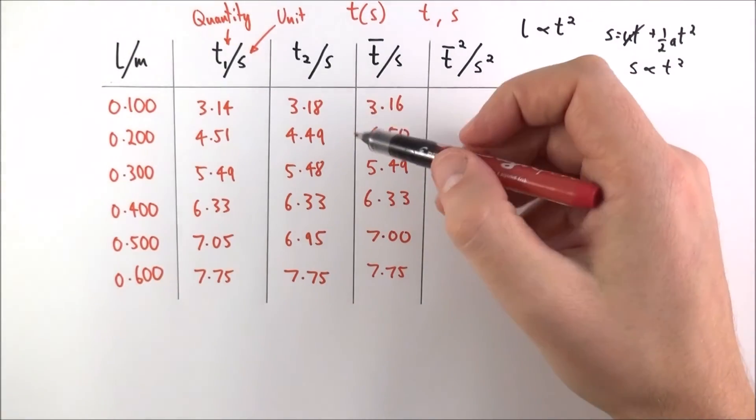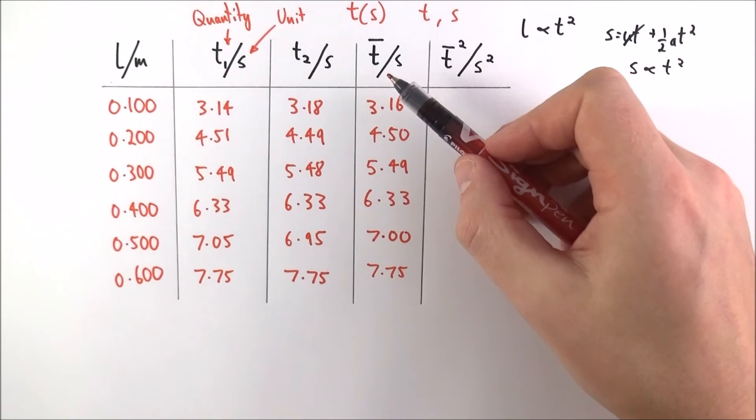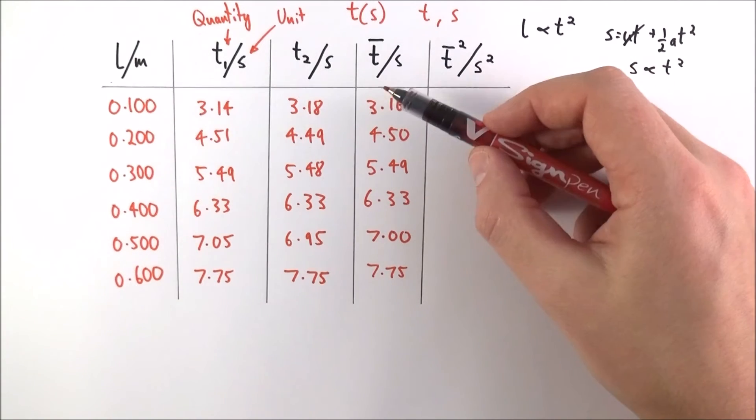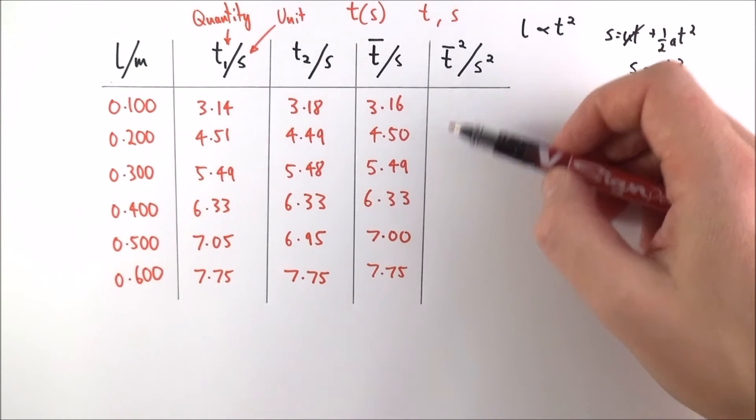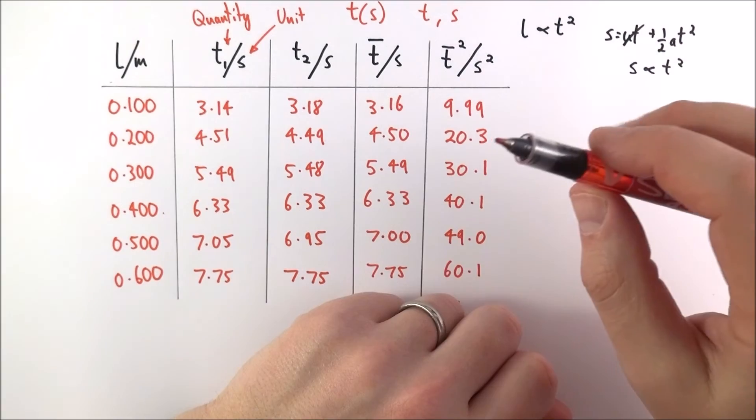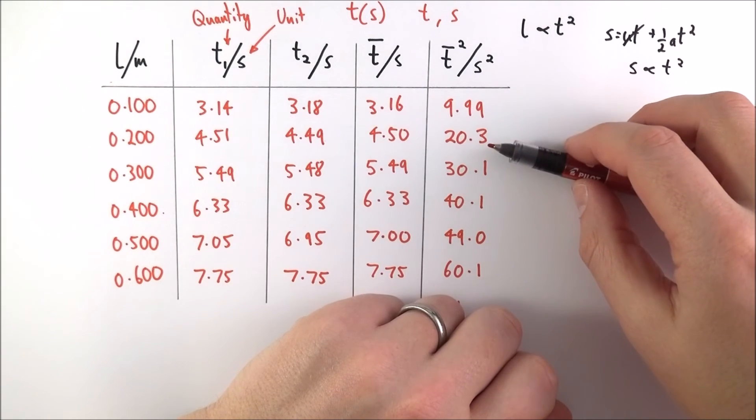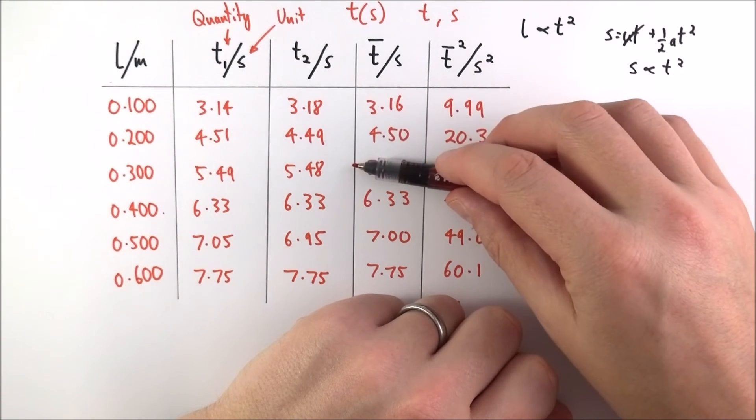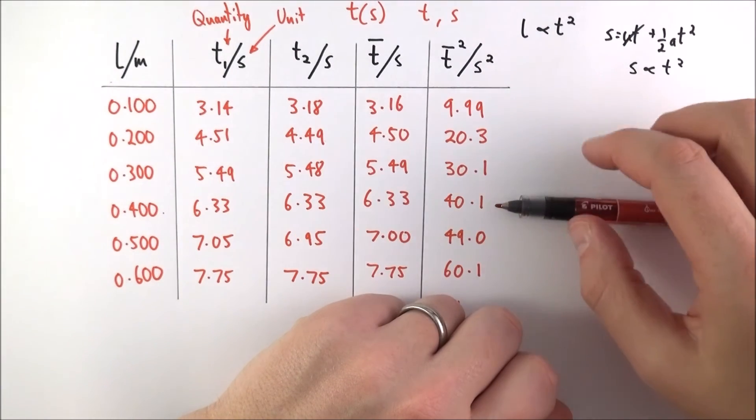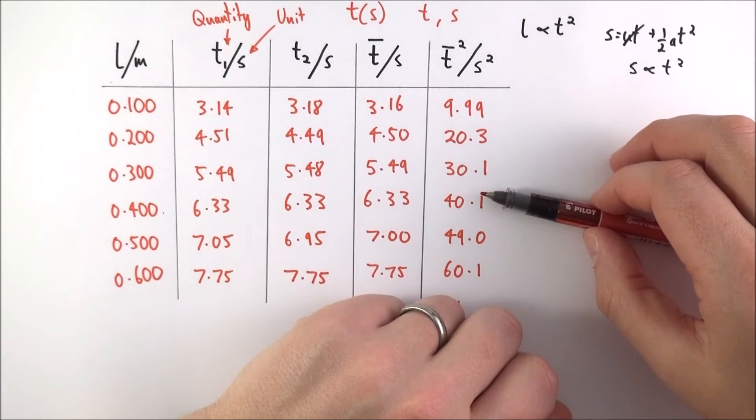What we could then do is we could then look at our calculated values based on this raw data. So again this is where I use my calculator and I can then start to put my calculated values into the table. And what I've done with my data here is because this was given to three significant figures I've kept my values here to three significant figures rather than increasing it to a fourth which is why it's now just one decimal place.